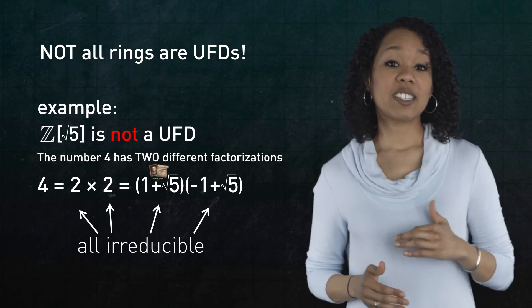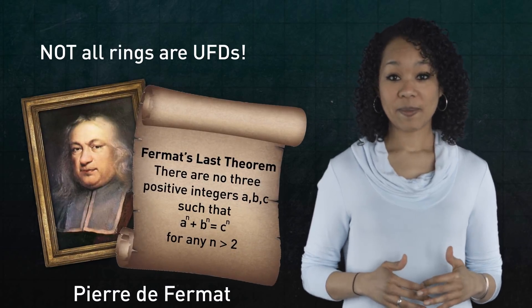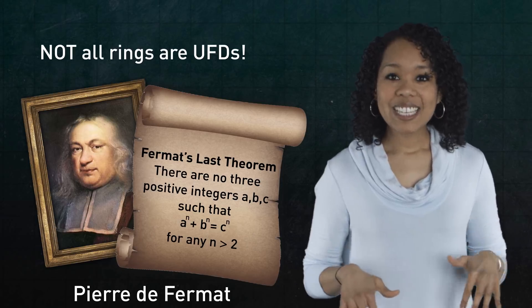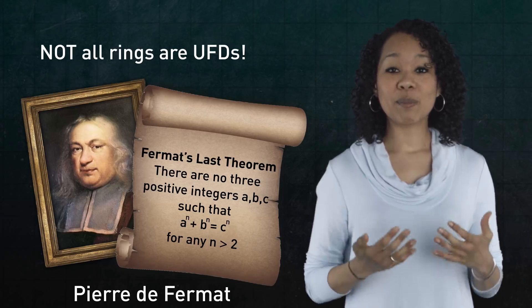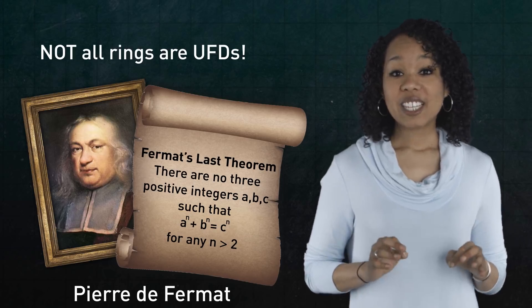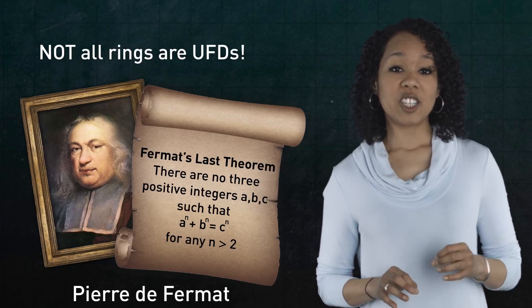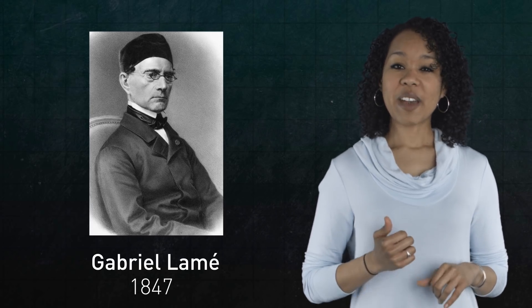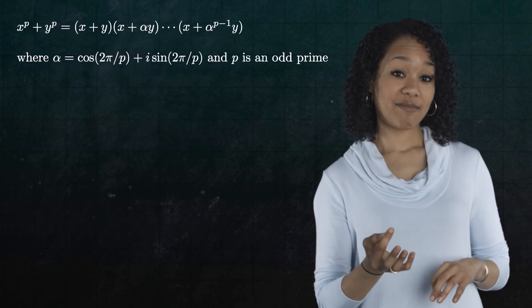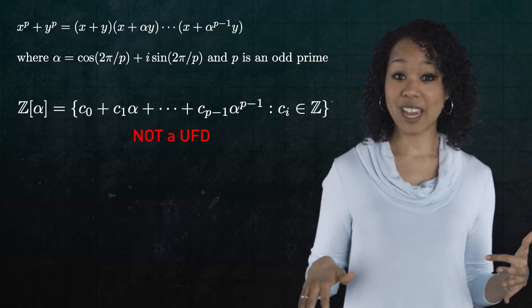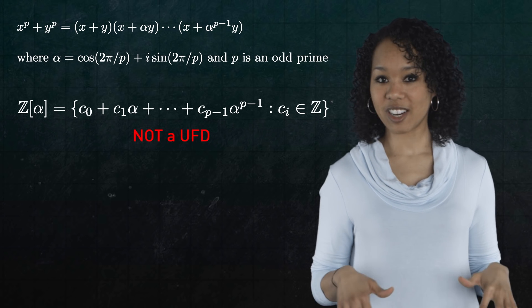And this brings us back to Fermat's Last Theorem. The absence of unique factorization is precisely why one of the many attempts to prove Fermat's Last Theorem wasn't successful. In 1847, French mathematician Gabriel Lamé thought he had proved Fermat's conjecture by factoring an expression like this, which occurred in the ring Z adjoined alpha, which is not a unique factorization domain, and so his technique didn't work.